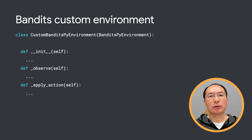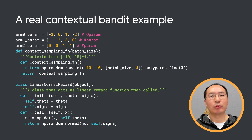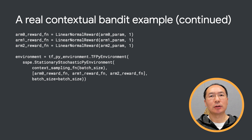Similar to reinforcement learning environments, if you want to solve your own multi-armed bandit problems, you need to create a custom bandit environment. In this case, you only need to define init, observe, and apply action functions. This subclassing is to make sure that the state transitions are not influenced by the actions. What's nice about the Bandit Library is that we even have pre-implemented environments you can use directly. Here, we are defining three arms with four-dimensional contextual features between minus 10 and 10. The rewards are linear payoffs based on the context. We then use the built-in stationary stochastic pi environment to create the environment we want. This is easier than creating a subclass of bandit's pi environment and defining init, observe, and apply action functions.